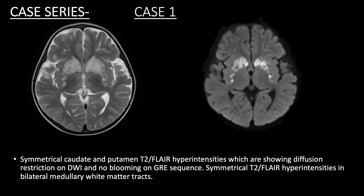Case 1 is of a 2-year-old male patient, which shows caudate and putamen T2 FLAIR hyperintensities with diffusion restriction. Also, there were symmetrical T2 FLAIR hyperintensities in bilateral medullary white matter tracts. There was a double lactate peak in caudate nucleus on MRS.